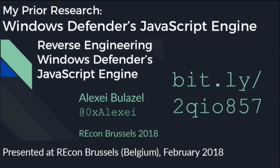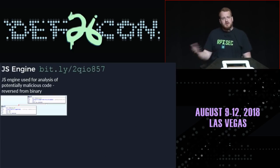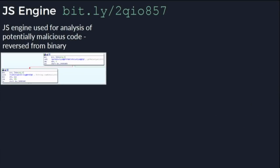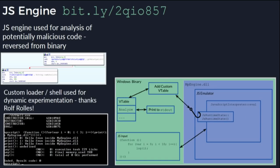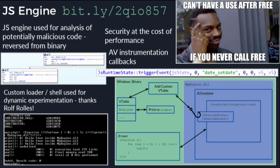Before going into my work on the Windows binary engine, let me quickly recap what I did reverse engineering the JavaScript engine. Windows Defender has a JavaScript engine used for analysis of potentially malicious JavaScript code. I reversed it from binary using a custom loader in shell for dynamic experimentation. Throughout the JavaScript engine I found AV instrumentation callbacks that inform the heuristic portion of Defender about actions taken by potentially malicious JavaScript. I also found developers prioritized security at the cost of performance — the JavaScript engine is very stripped down, without JIT or many optimizations, but relatively secure with pared-down attack surface.